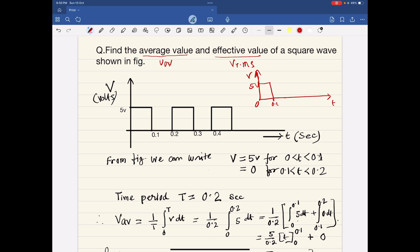At 0.2 again we can see the magnitude is 5 volt up to 0.3. This is 0.2, this is 0.3.